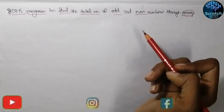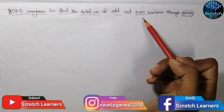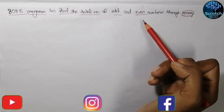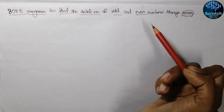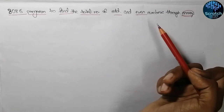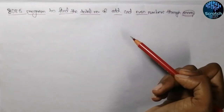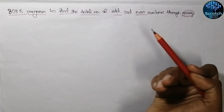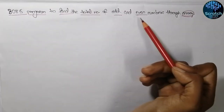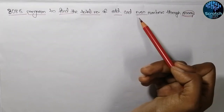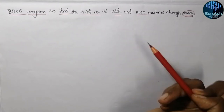I have already discussed how to find whether a number is odd or even. If you don't know about that then please watch that video — you can get the link in the i button. That video will help you understand this video very well, because if you don't know how to check whether a number is odd or even, it will not be possible to find the total number of odd and even numbers through an array.